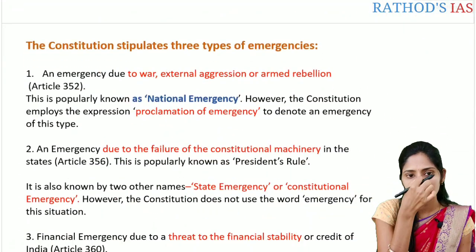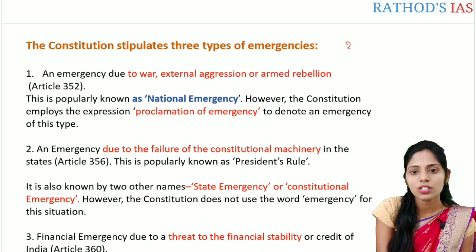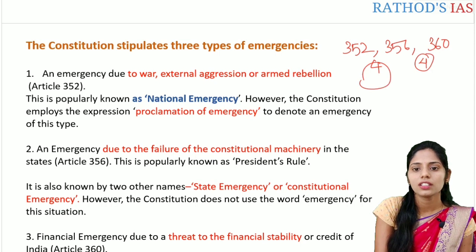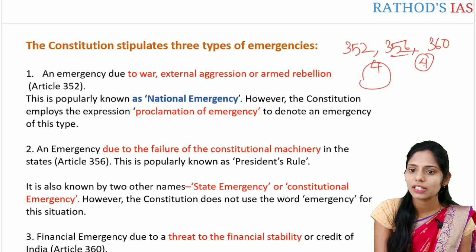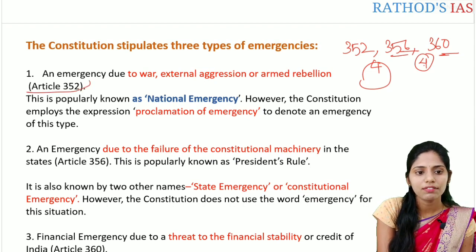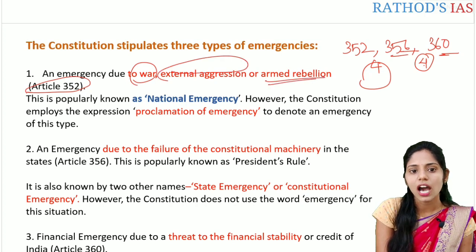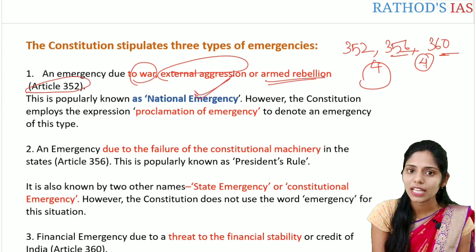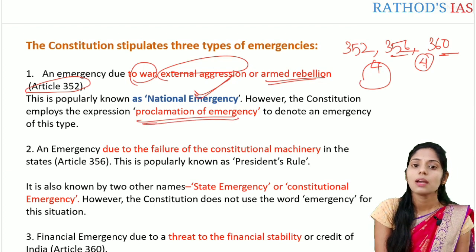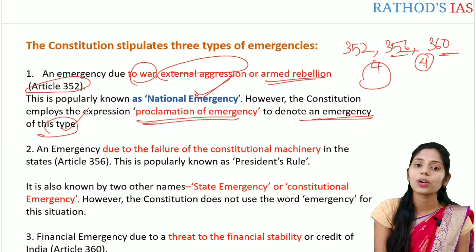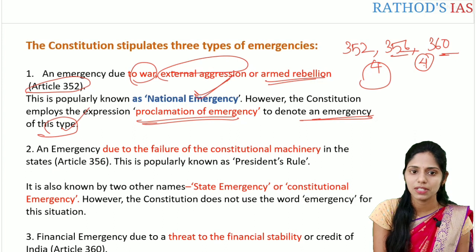The constitution stipulates three types of emergency according to articles 352, 356, and 360. A memory trick to remember: add four to each — 352 plus 4 is 356, and 356 plus 4 is 360. Article 352 covers emergency due to war, external aggression, or armed rebellion — properly called national emergency. The constitution uses the expression 'proclamation of emergency' to denote this type. Whenever we say 'proclamation of emergency,' that refers to the national emergency.